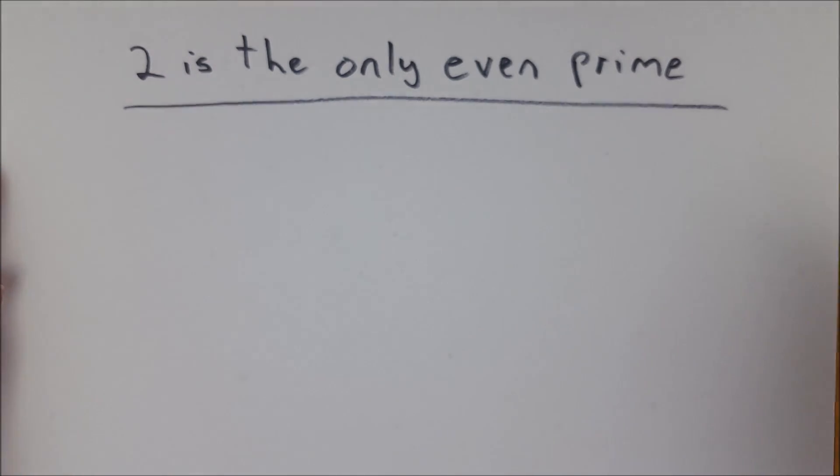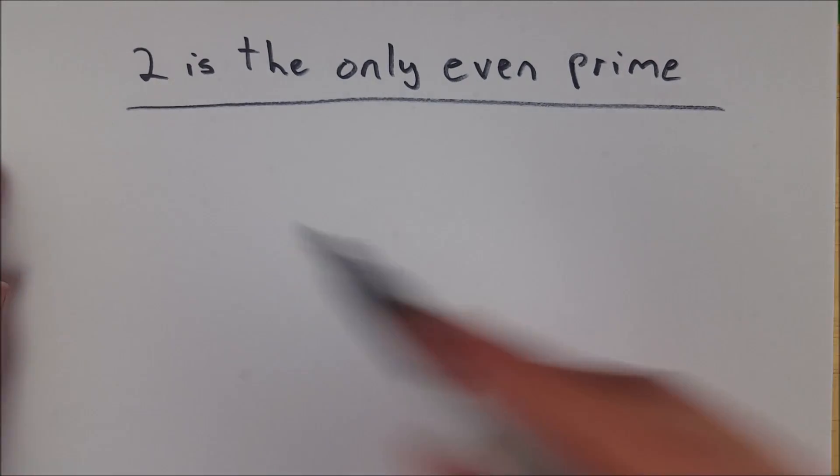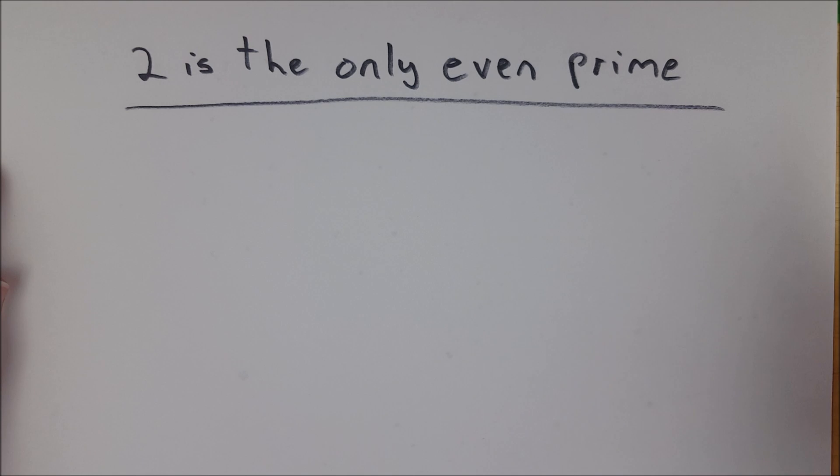And of course we know that 2 is a prime number because its only divisors are 2, which is itself, and 1. 2 times 1 equals 2, and there's no other way to factor 2.